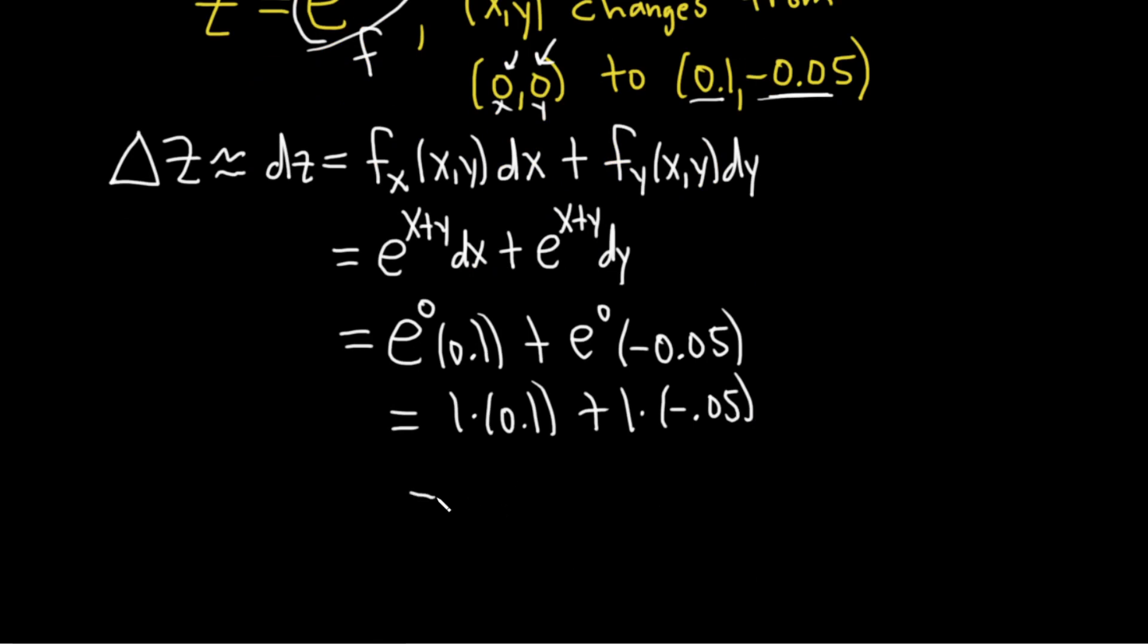This is 1 times 0.1 plus 1 times negative 0.05. So this is just 0.1 minus 0.05, which is just 0.05. Take 0.1, you subtract half of that, you get half of that. And that would be the answer. That would be the approximation for the change in z. So it's approximately equal to 0.05. I hope this video has helped. Good luck.